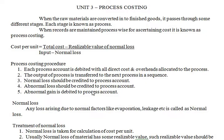The process costing procedure is as follows: each process account is debited with all direct costs and overheads allocated to the process. The output of a process is transferred to the next process in sequence. Normal loss should be credited to the process account, and abnormal loss should also be credited to the process account.